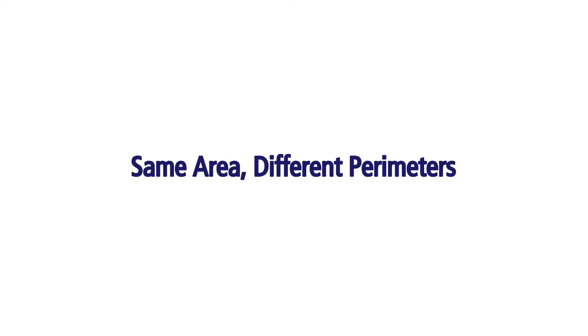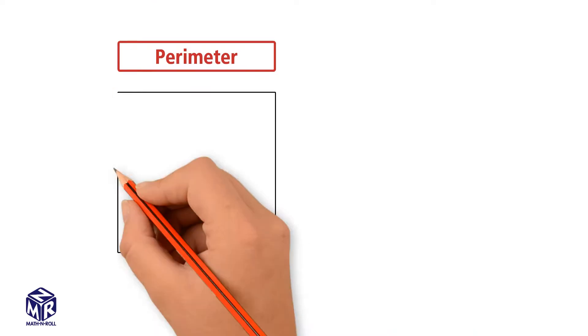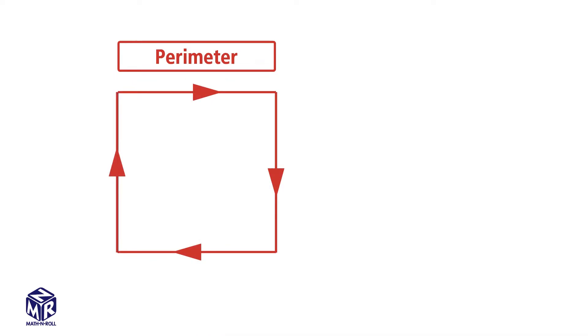Same area, different perimeters. We already know that the perimeter is the distance around the figure. It's measured in linear units or units.